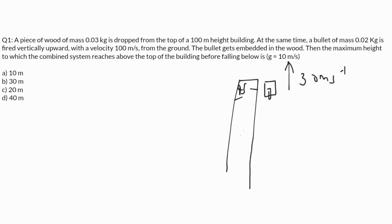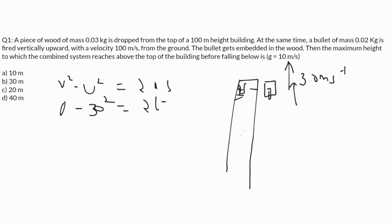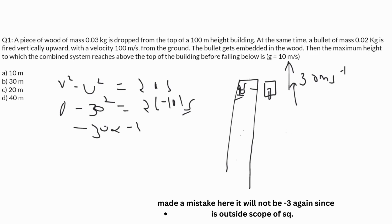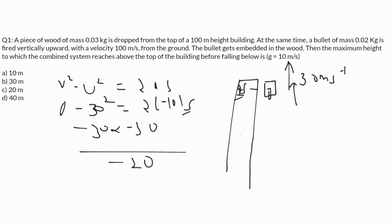The combined system is at 95 meters height with 30 meters per second upward velocity. Using v squared equals u squared plus 2as with v equals 0, u equals 30, a equals minus 10: 0 equals 900 minus 20s, so s equals 45 meters. The height covered above the top of the building is 95 meters height minus... the answer is 40 meters, which is option D. Thanks for watching.